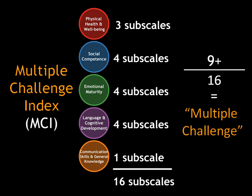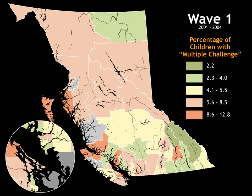What we're doing now is mapping this out, because it gives us a much clearer idea of the challenges that the school system faces when dealing with new cohorts of children coming in. This map shows the Multiple Challenge Index by geographic school districts across the province for wave one of the EDI, from 2001 to 2004.